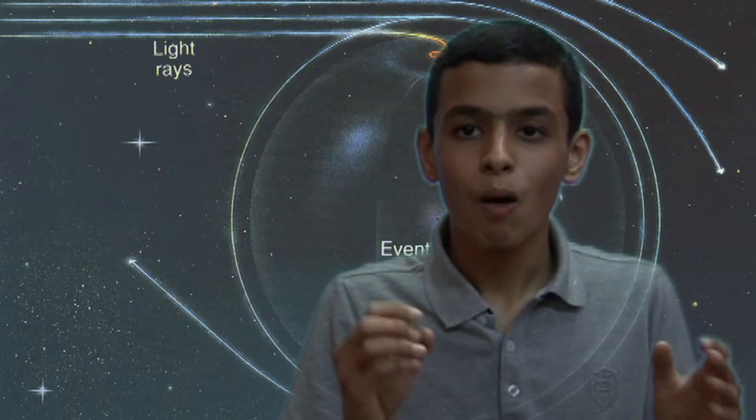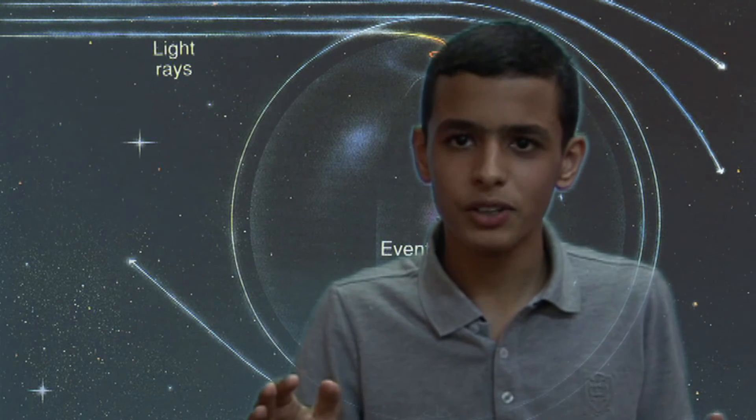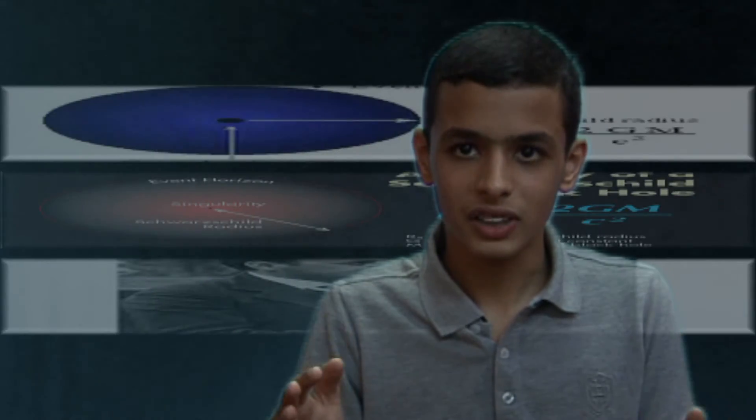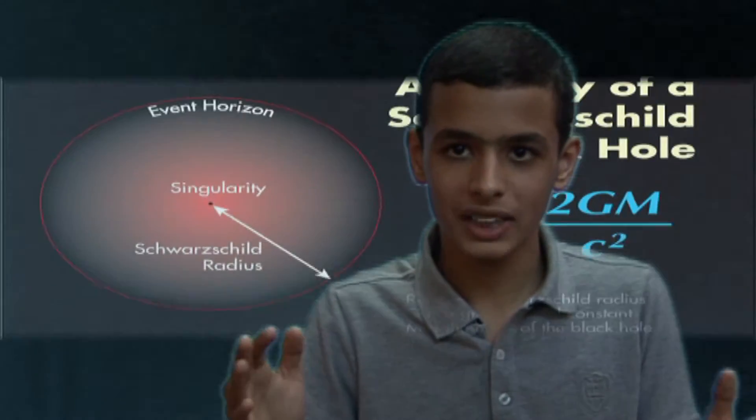Black holes have many layers. One of them is the event horizon. Once a particle crosses it, it cannot return. The surface at the Schwarzschild radius acts as an event horizon, at which the escape velocity reaches its maximum limit.